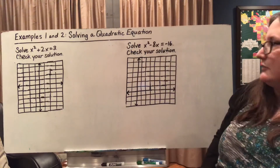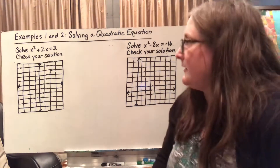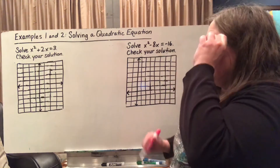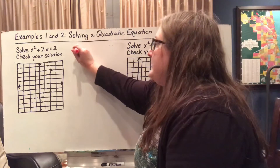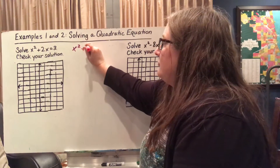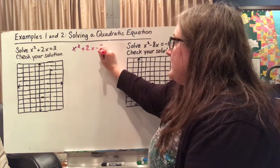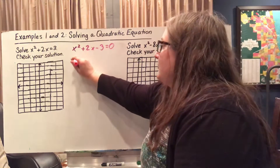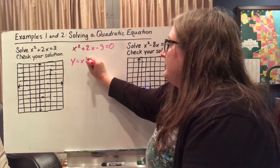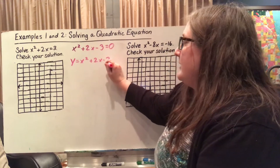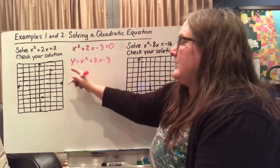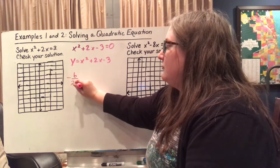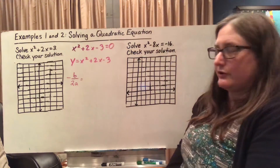So let's try solving a quadratic equation by graphing. Here we have the quadratic equation x² + 2x = 3, which set to 0 will be x² + 2x - 3 = 0. My related equation is y = x² + 2x - 3. In order to graph this, I need to find my vertex, so I'm going to use my shortcut, negative b over 2a, to find the x-coordinate of my vertex.